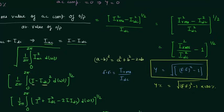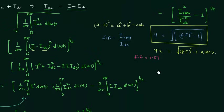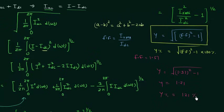We already know that in case of half wave rectifier, the form factor is equal to 1.57. Using this, gamma equals the square root of (1.57² − 1) equals the square root of (2.4649 − 1) = 1.21. The percentage ripple factor is 121%. So we have 121% of AC component in the output current — this is a very high value and is one of the disadvantages of the half wave rectifier.